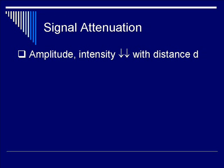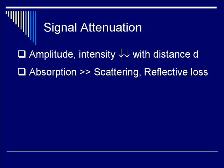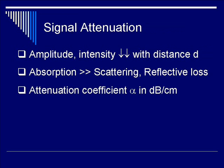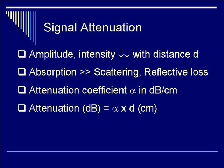Finally, we're going to talk about signal attenuation of ultrasound beams. Both the amplitude and intensity of the ultrasound beam decrease with distance D. Most ultrasound beam signal loss is due to absorption, which is significantly greater than the scattering or reflective loss component. The attenuation coefficient can be lumped for all three mechanisms into a single variable called alpha, in units of decibels per centimeter depth. Attenuation in its totality is measured as the product of alpha multiplied by the actual distance in centimeters, and the resulting unit for attenuation is decibels.